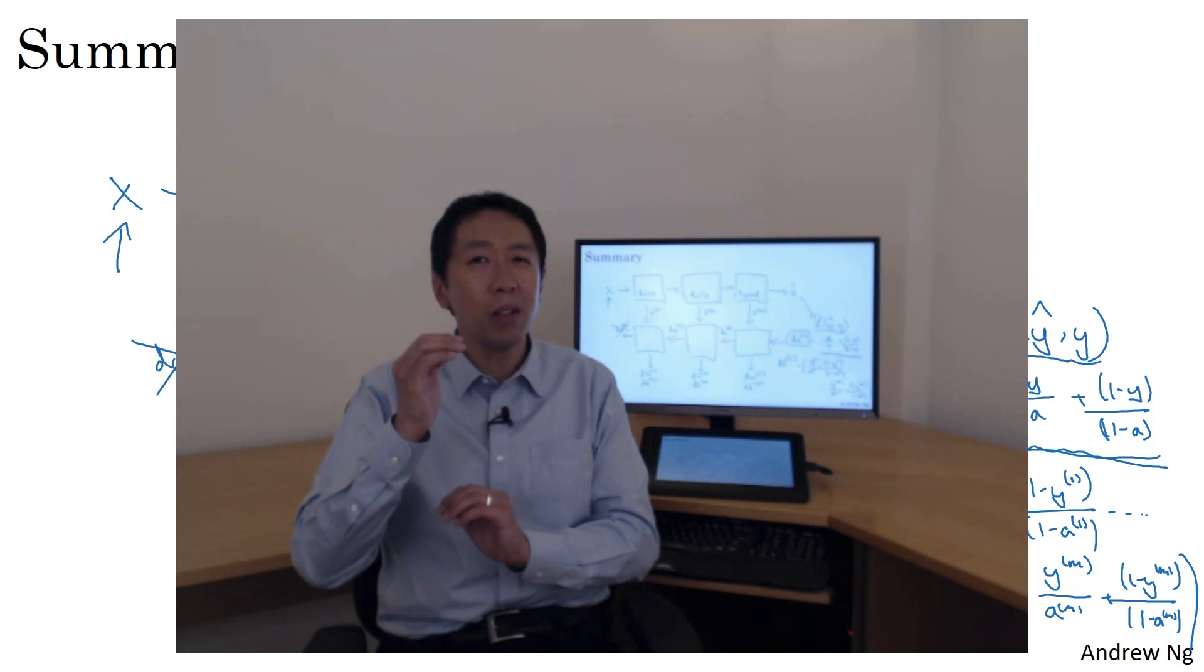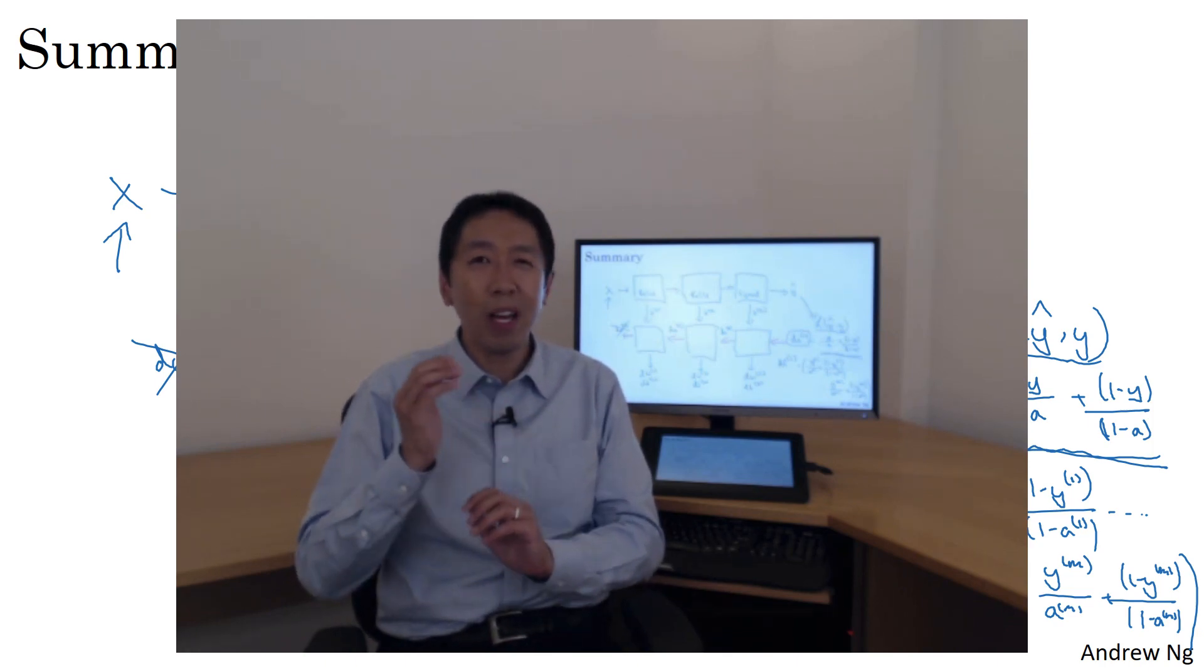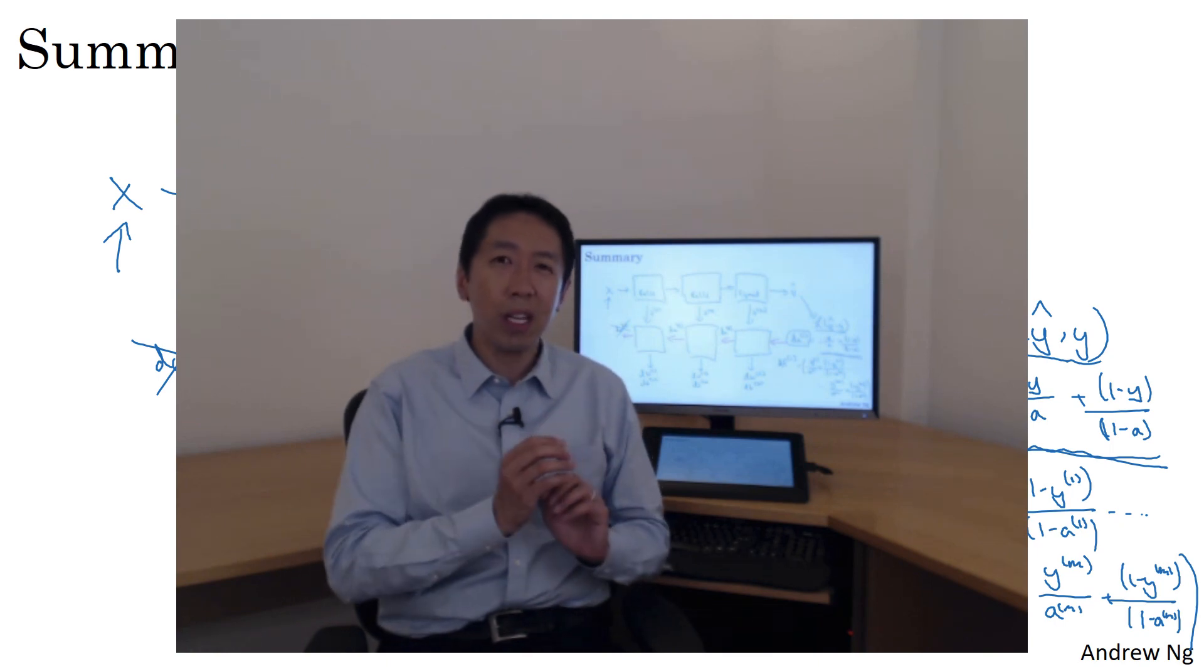Although I have to say, even today when I implement a learning algorithm, sometimes even I'm surprised when my implementation works. It's because a lot of the complexity of machine learning comes from the data rather than from the lines of code. So sometimes you implement a few lines of code, not quite sure what it did, but it almost magically works. A lot of the magic is actually not in the piece of code you write, which is often not too long, not exactly simple, but not 10,000 or 100,000 lines of code. But you feed it so much data that sometimes, even working in machine learning for a long time, it still surprises me when my learning algorithm works. Because a lot of the complexity comes from the data rather than from writing thousands of lines of code.